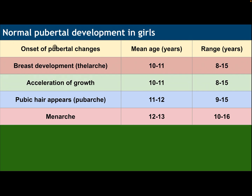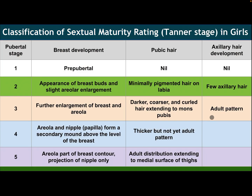Normal pubertal development in girls: breast development (thelarche) ranges from age 8 to 15 years; acceleration of growth from 8 to 15; pubic hair appearance (pubarche) from 9 to 15; and menarche from 10 to 16 years.